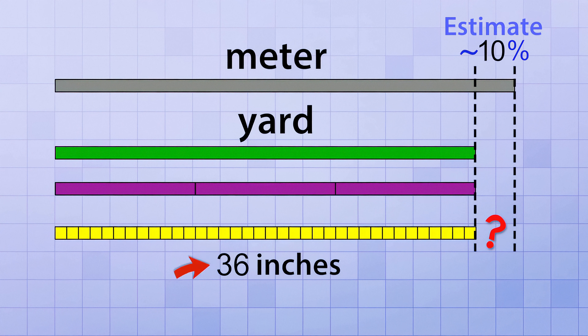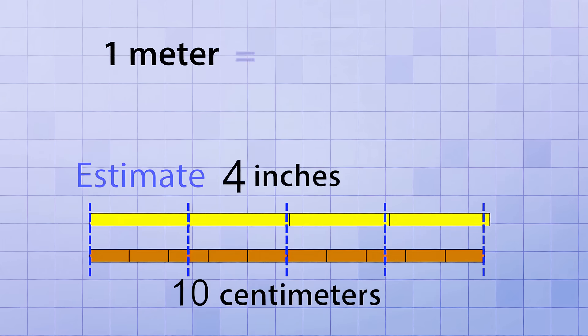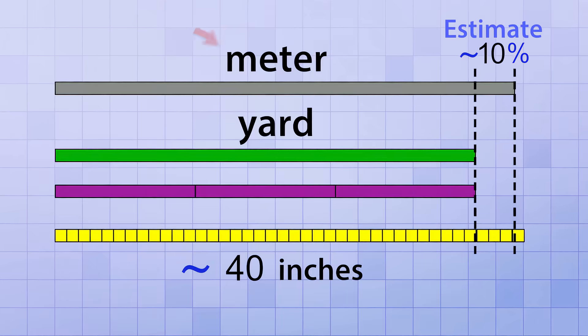And if we add that to 36 inches, that means a meter is pretty close to 39.6 inches, or 40 inches if we round up a little. And that checks out, because remember, we just estimated that 10 centimeters is about 4 inches. Well, a meter is 10 times as long as 10 centimeters, and 40 inches is 10 times as long as 4 inches. So a good rough estimate of a meter is that it's about 40 inches long.